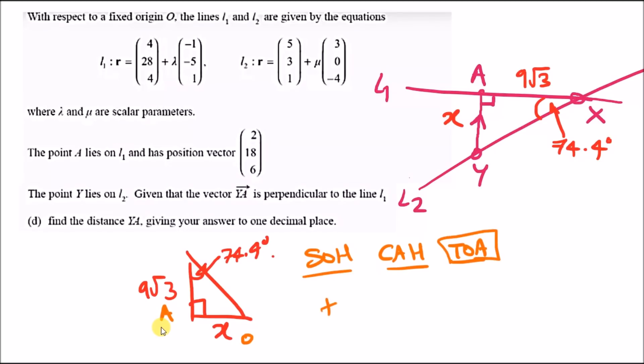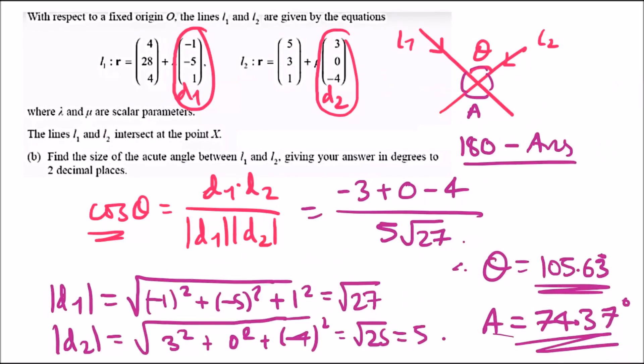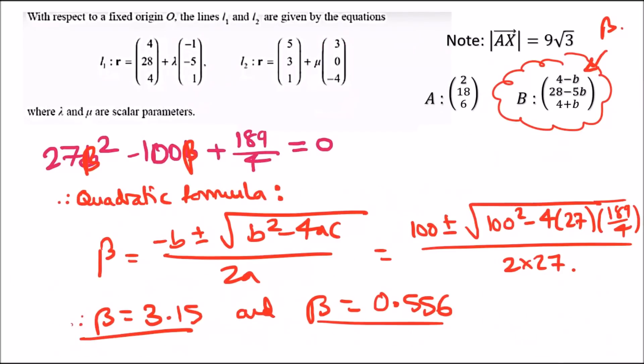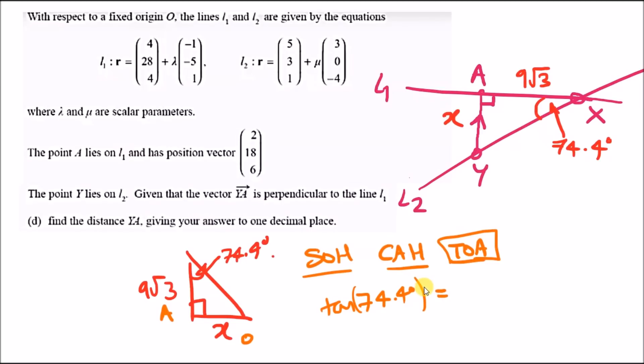This implies that tan of the angle 74.37 degrees must equal opposite over adjacent. Opposite over adjacent is X over 9 root 3. Therefore, to find X, multiply 9 root 3, so it's 9 root 3 times tan 74.37 degrees.